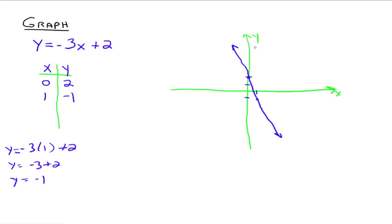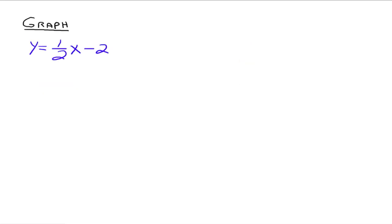Connect the dots to get the graph. Notice this line is going down — reading from left to right, it decreases — whereas the previous one was going up. Let's try one more: y equals one-half x minus 2. It's a linear equation, so the graph is a line and we just need a couple of ordered pairs. When choosing numbers for x, you can choose any numbers you want — you don't have to go in order.